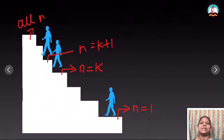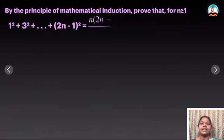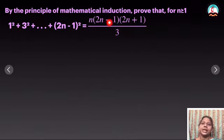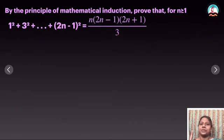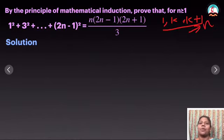Now let me do some problems. The first problem is: by the principle of mathematical induction, prove that 1² + 3² + ... + (2n-1)² is equal to n(2n-1)(2n+1) divided by 3. So this is what we have to prove, step by step. Can you remember the three things we have to do? First, show it is true for n=1; assume it is true for k; then prove it for k+1. If all three are true, then it is true for all values of n.